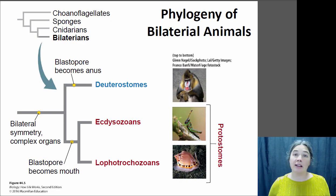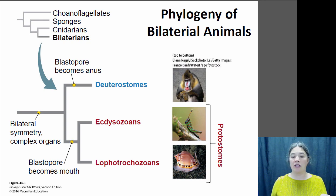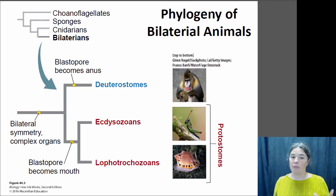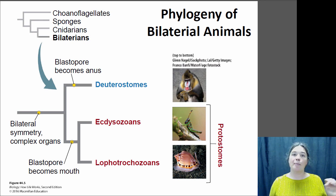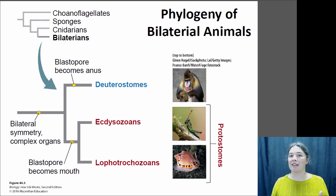The bilaterians, or bilateral animals, can be divided into three groups. Bilateral animals have bilateral symmetry and are triploblastic, with three embryonic tissue types. They can be divided into the lophotrochozoans and the ecdysozoans — both of which are protostomes, where the blastopore forms the mouth — as well as the deuterostomes, where the first opening to the digestive system forms the anus.